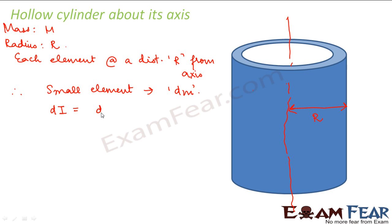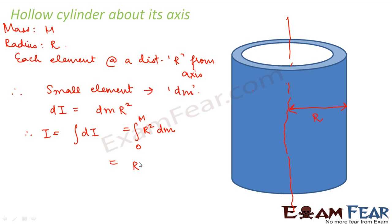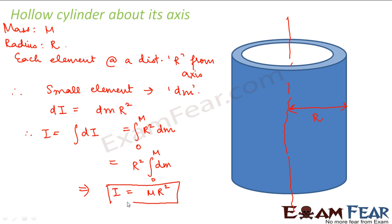The moment of inertia of that small element is dm into r squared. Therefore the total moment of inertia will be equal to integration of dI, that is equal to integration of r squared dm. This integration is over dm, so the limits will be from 0 to capital M, because M is the total mass of the cylinder. So I is equal to M r squared. This is the moment of inertia for a hollow cylinder.